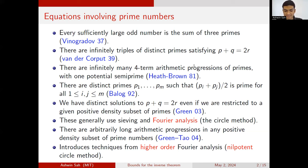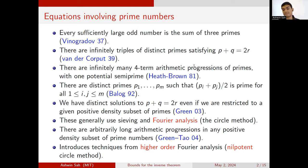There have been further works such as so-called linear equations in the primes by Green-Tao and Green-Tao-Ziegler, which established basically more complicated linear equations — not everything like twin primes or bounded gaps, but a quite broad set of results. Are there any questions about this history so far? Admittedly, it's a bit biased towards this particular set of problems.